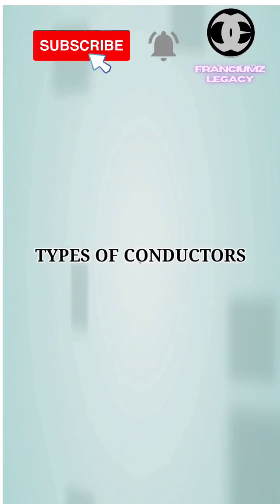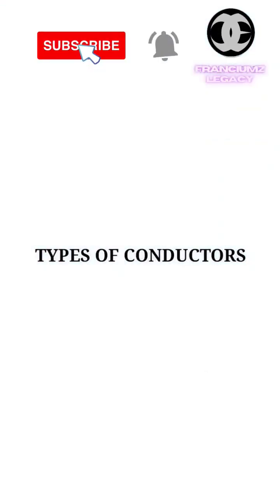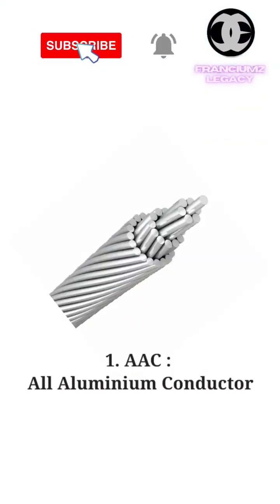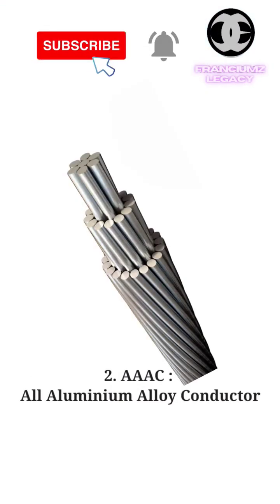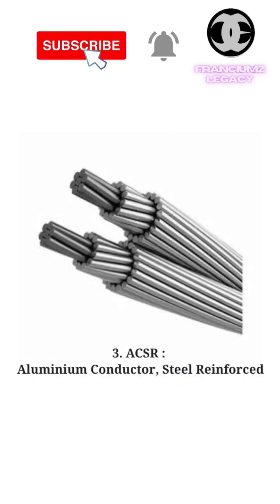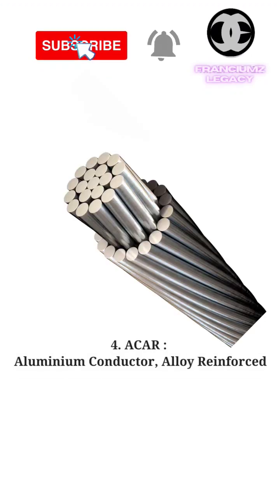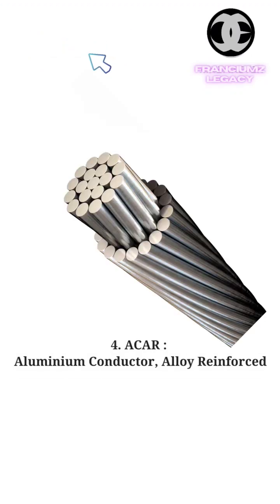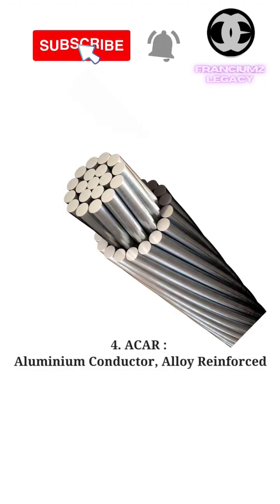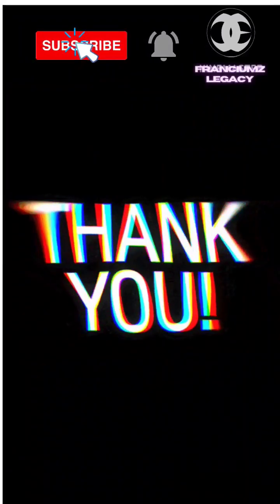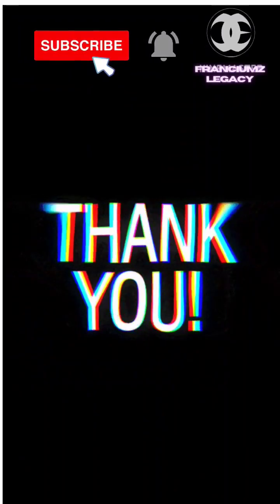Types of conductors used in overhead lines: 1. AAC — all-aluminium conductor. 2. AAAC — all-aluminium alloy conductor. 3. ACSR — aluminum conductor, steel reinforced. 4. ACAR — aluminum conductor, alloy reinforced. Thank you very much for watching the video.